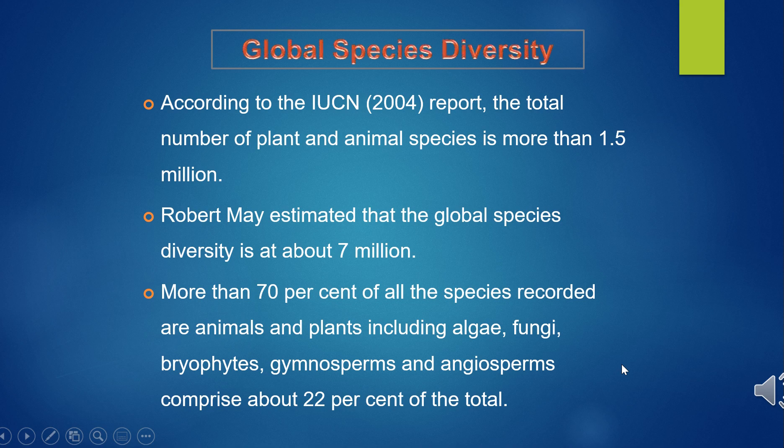We will study about global species diversity. Since there are published records of all the species discovered and named, we know how many species have been recorded so far. However, it is not easy to answer how many species there are on Earth. According to IUCN in 2004, the total number of plant and animal species described is slightly more than 1.5 million.